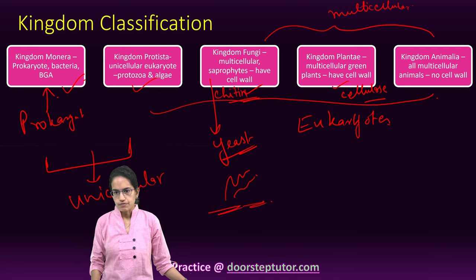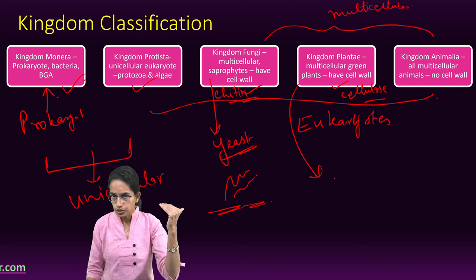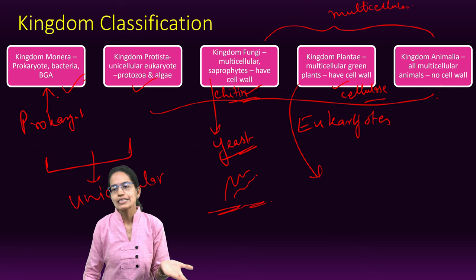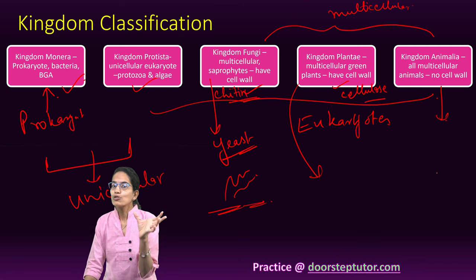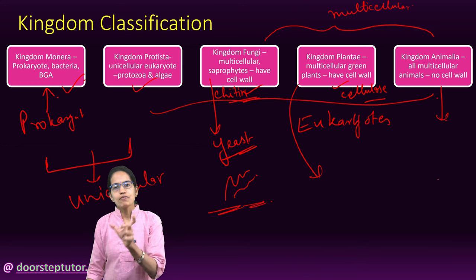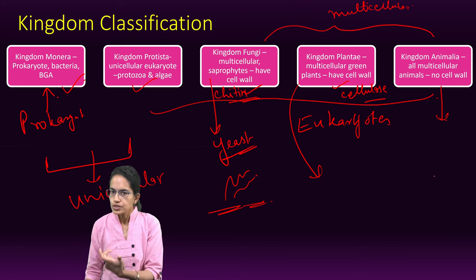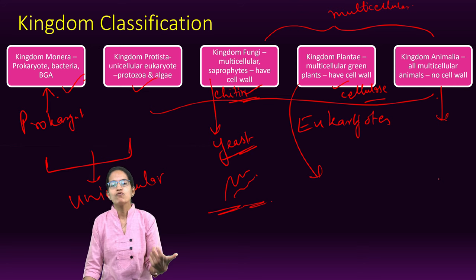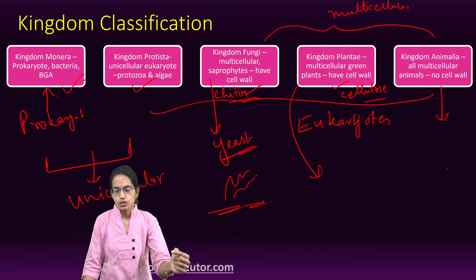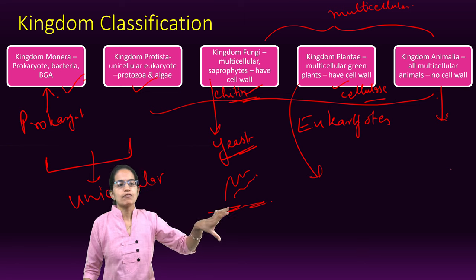Under the Plantae kingdom, organisms are multicellular, green, have the capability to produce their own food, and the cell wall is made of cellulose. They are autotrophs. Animalia is again multicellular. Since they belong to the animal kingdom, they do not have a cell wall. They are heterotrophic — they do not produce their own food and depend on the Plantae kingdom for basic food requirements. One very important characteristic of the animal kingdom is limited growth: once they attain maturity, growth stops. This is the basic five kingdom classification.